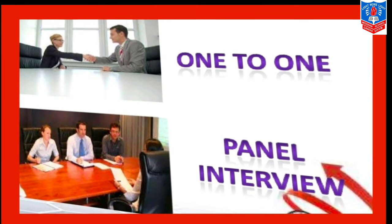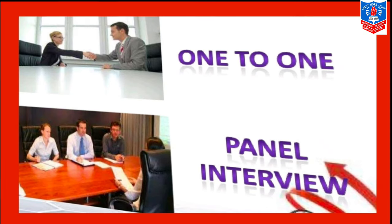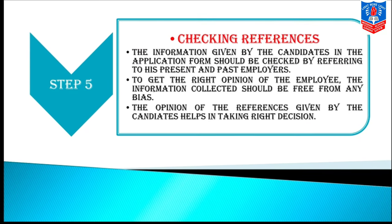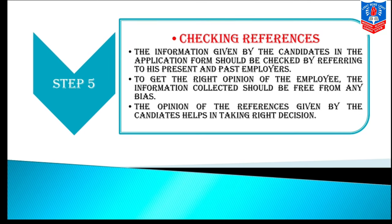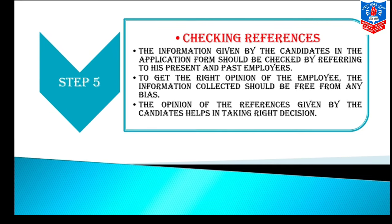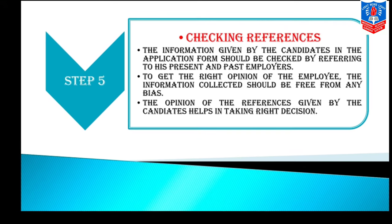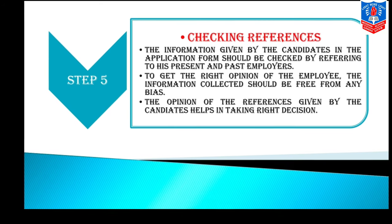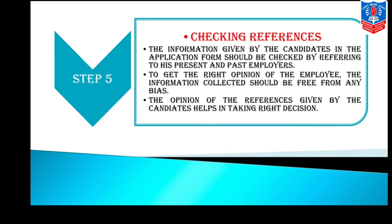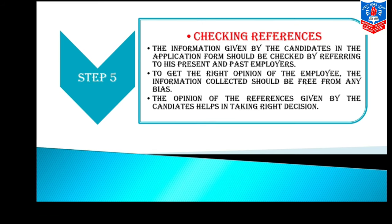If the candidate is found proper in the personal interview, he will move on to the next step: Step 5 — Checking references. The information given by the candidate in the application form should be checked by referring to his present and past employers — from where he has worked or is currently working — to get correct information about the candidate. To get the right opinion about an employee, the information collected should be free from any bias. The opinion from references helps in taking the right decision.